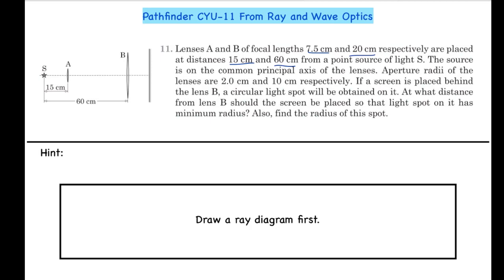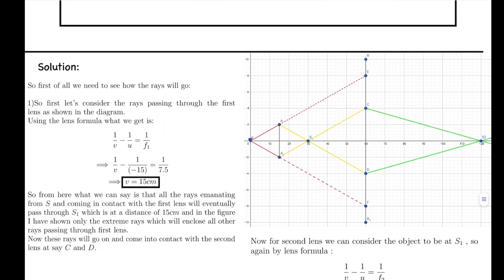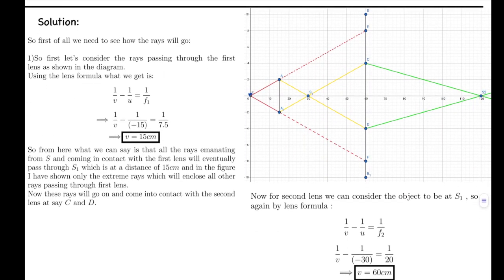Now let's look at the solution. First of all we need to see how the rays will go. I have considered 3 types of rays. Let's first consider the rays passing through the first lens AA1, as shown in the diagram.